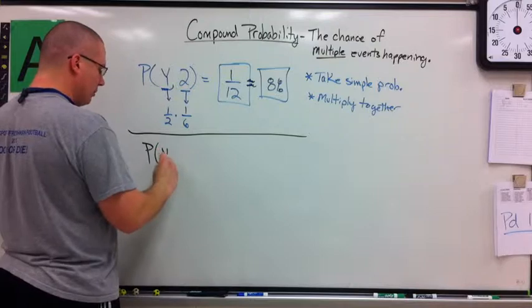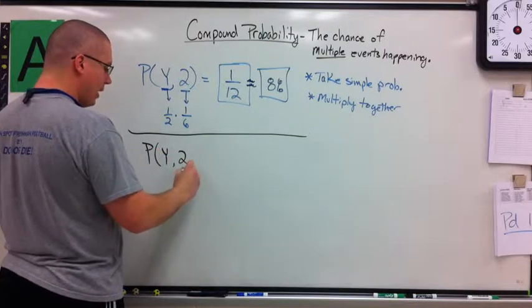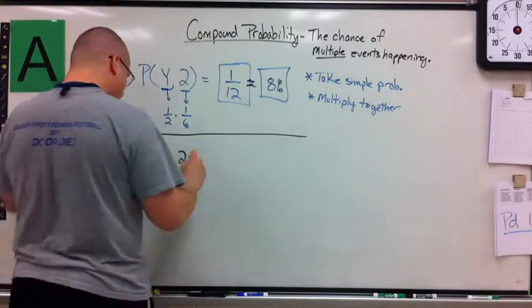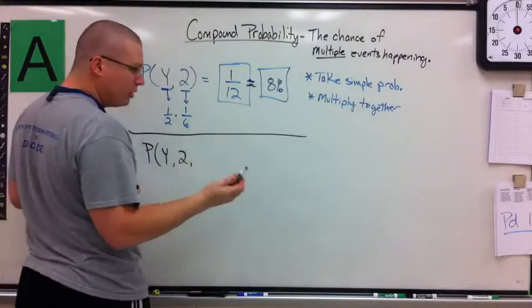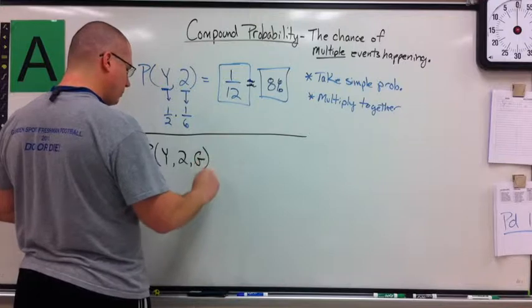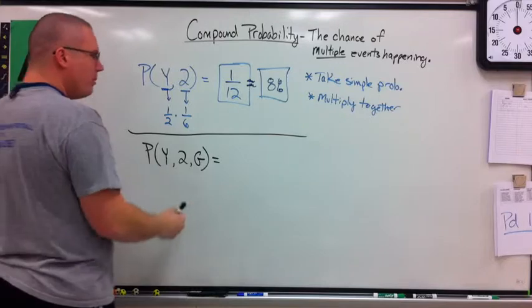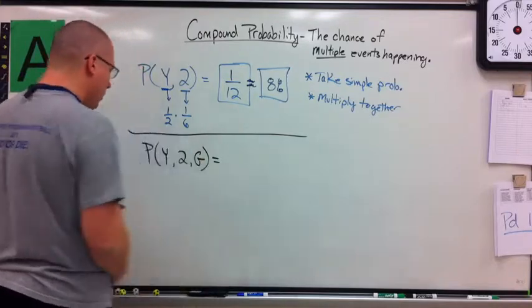Probability of a yellow. Rolling a two on a die. Now, let's get the chance of getting a white. Actually, let's do green.